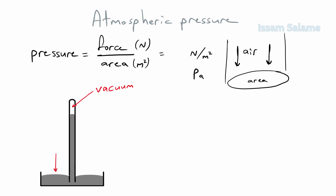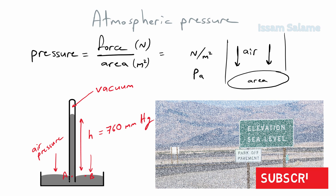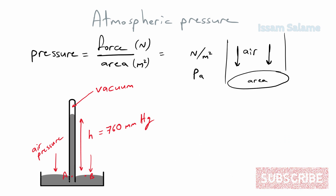The mercury inside the glass tube couldn't go all the way down because of the atmospheric pressure exerted on the surface of mercury in the dish. Taking two points — one at the surface of mercury in the dish and another at the same level inside the tube — since they are at the same level in the same liquid, they must be under the same pressure. This means atmospheric pressure equals the pressure exerted by the mercury column above. At sea level, this corresponds to 760 millimeters of mercury.